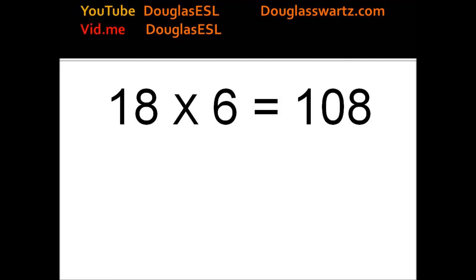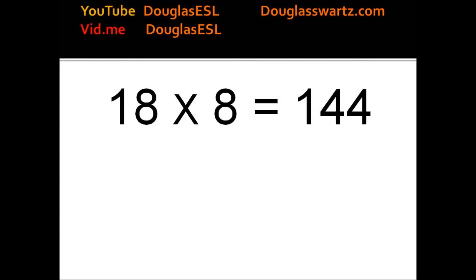18 times 6 equals 108. 18 times 7 equals 126. 18 times 8 equals 144. 18 times 9 equals 162.